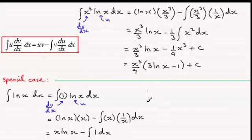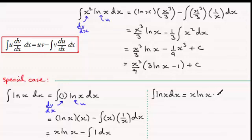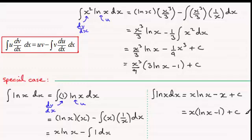So the integral of the natural log of x with respect to x gives us x times the natural log of x. And if we integrate 1 with respect to x, we just get x, and then plus the constant of integration. We could factorise this — pull out x as a common factor — and you've got the natural log of x minus 1, plus c.